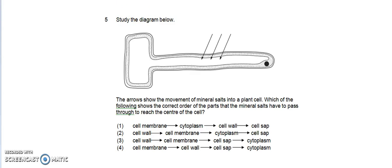Question five: Study the diagram below. The arrows show the movement of mineral salts into a plant cell. This is a plant cell, and the arrows actually show the movement of mineral salts into the plant cell. Which of the following shows the correct order of the parts that the mineral salts have to pass through to reach